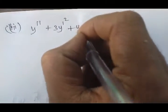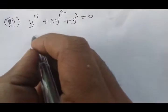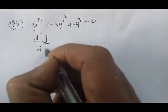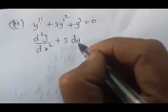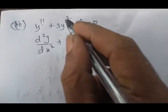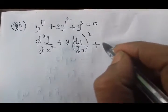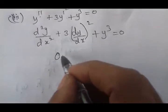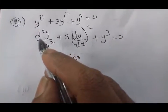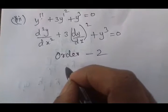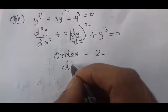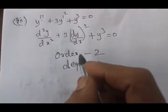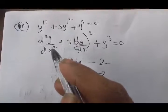y'' + 3(y')² + y³ = 0. If you look at the degree, if you look at d²y/dx², the power is higher than dy/dx. The highest order is the power of d²y/dx².